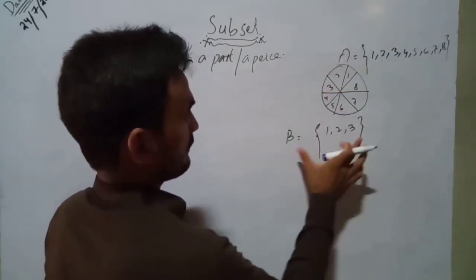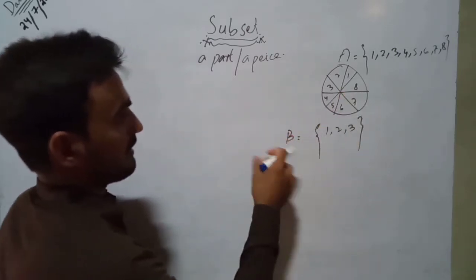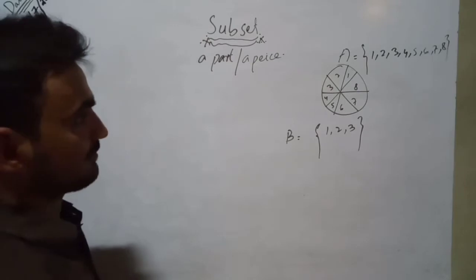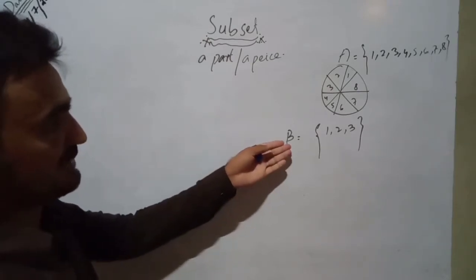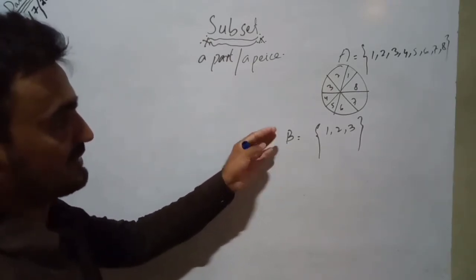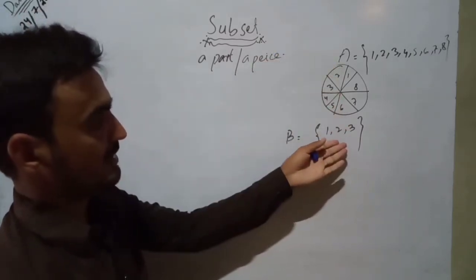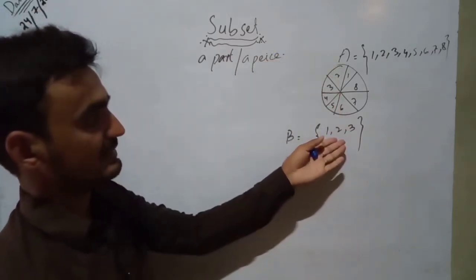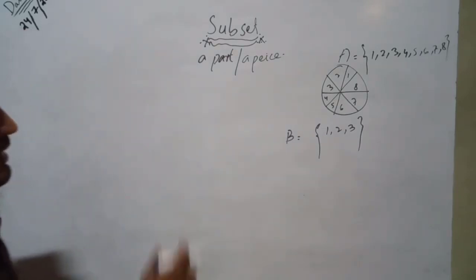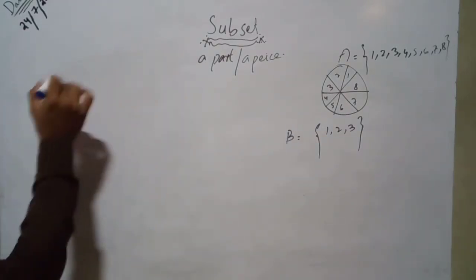From this example it is clear that set B is a subset of set A. So if set A and set B are two sets, and all or some elements of set B belong to set A, then set B is called a subset of set A. Now I am writing a definition of subset.